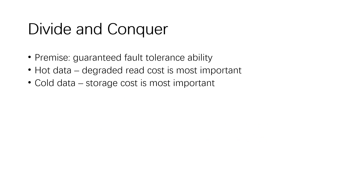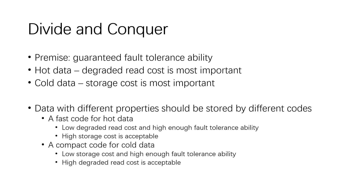So we can deal with these two kinds of data with different codes. First, we should guarantee a high enough fault tolerance ability. For hot data, degraded read cost is most important. For cold data, storage cost should be most considered. Data with different properties should be stored with different codes. To store hot data, the code should achieve low degraded read cost and high enough fault tolerance — we call this the fast code. To store cold data, the code should achieve low storage cost and high enough fault tolerance — we call this the compact code.